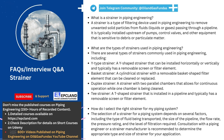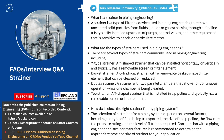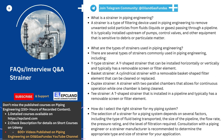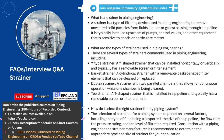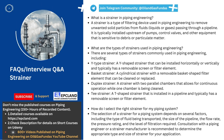Thirdly, duplex strainers have two parallel chambers that allow for continuous operation while one chamber is being cleaned. They are typically used for applications that require uninterrupted flow and cannot be shut down for maintenance. Lastly, T-strainers are T-shaped and are installed in a pipeline; they typically have a removable screen or filter element and are used for smaller diameter pipelines or low-flow applications. The specific type of strainer used depends on several factors such as the type of fluid being transported, the size of the pipeline, the flow rate, and the required level of filtration.